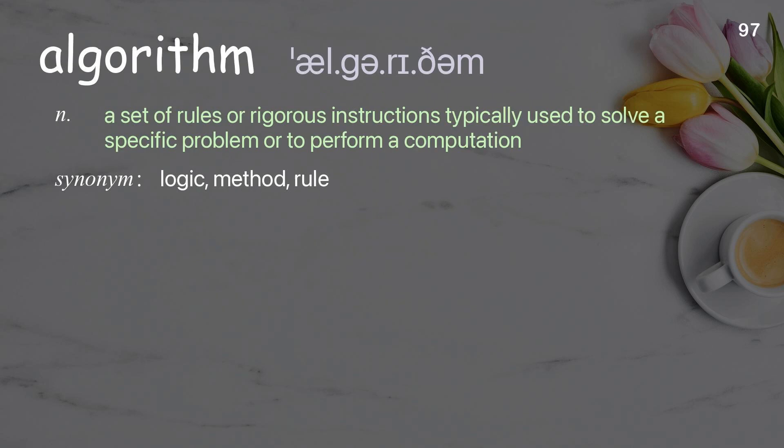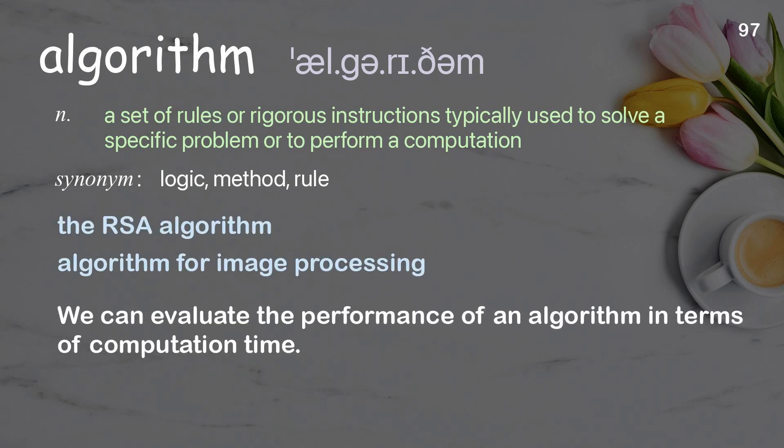Algorithm: a set of rules or rigorous instructions typically used to solve a specific problem or to perform a computation. Examples: the RSA algorithm, algorithm for image processing. We can evaluate the performance of an algorithm in terms of computation time.